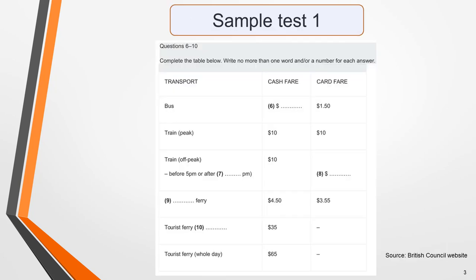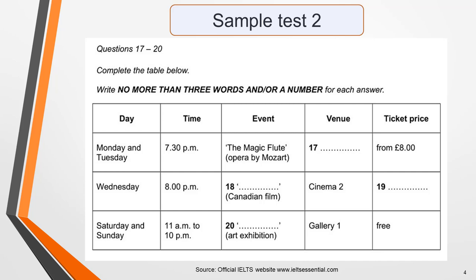Here are two sample questions from past papers. The recording for this first sample question is a telephone conversation between a clerk at the enquiry desk of a transport company and a man who is asking for travel information. You are required to fill in the missing information about the cost of fares for bus and train journeys from Bayswater to Harbour City. The recording for the second question is a radio broadcast about the National Arts Centre, requiring you to fill in four pieces of missing information. I'm going to use this second example to teach you the answer strategy.